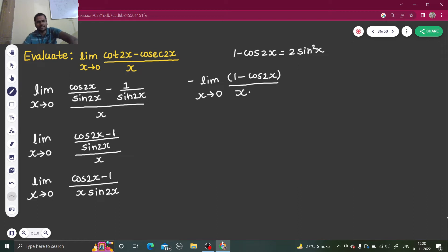And sine 2x identity also I know, that sine 2x is 2 sine x cos x. So into 2 sine x cos x.